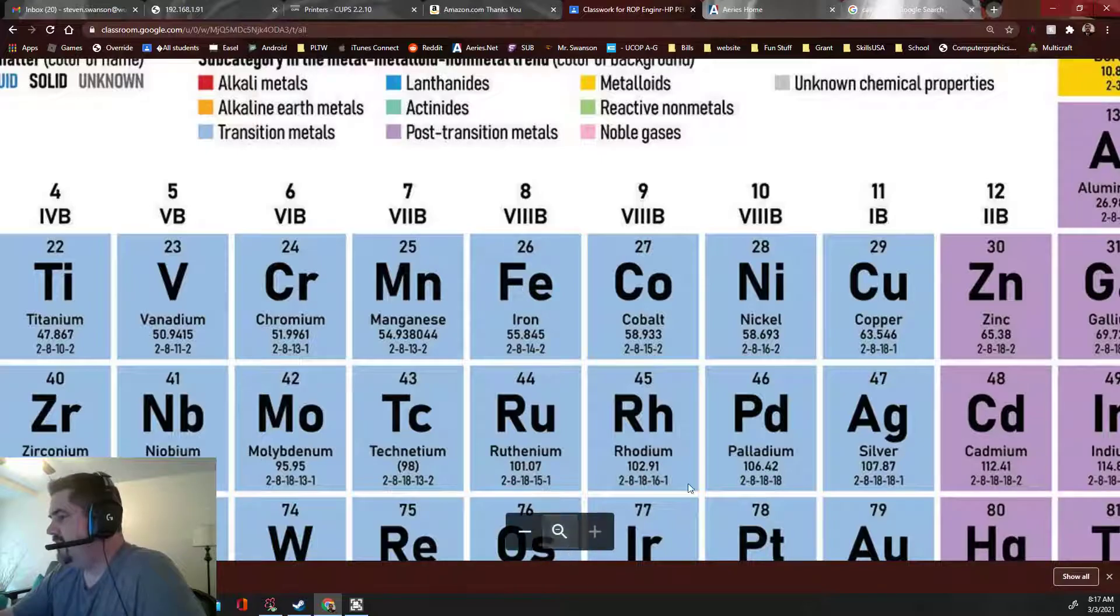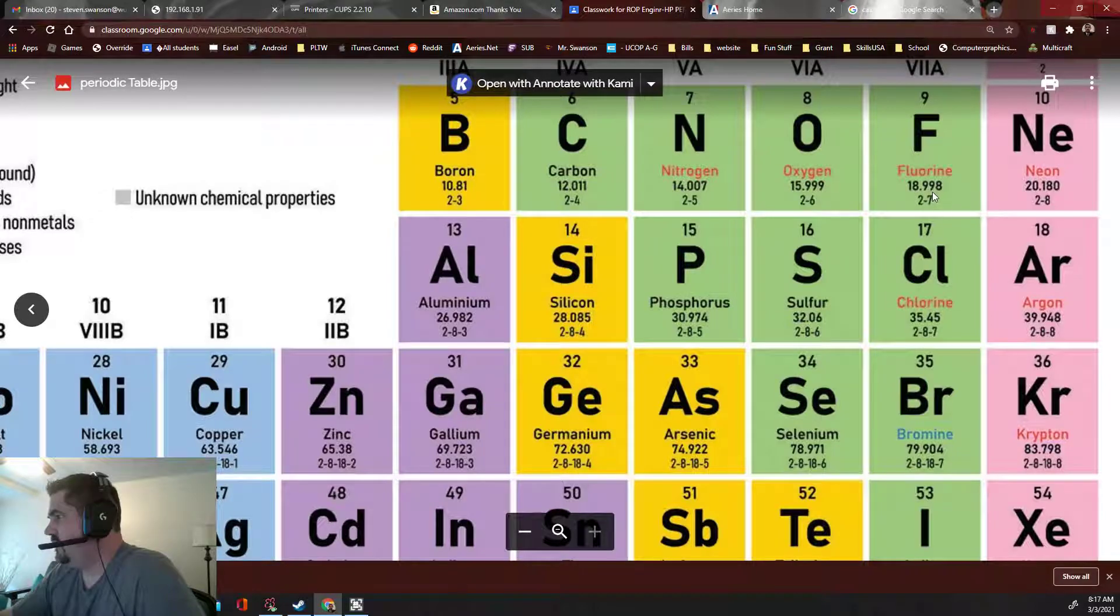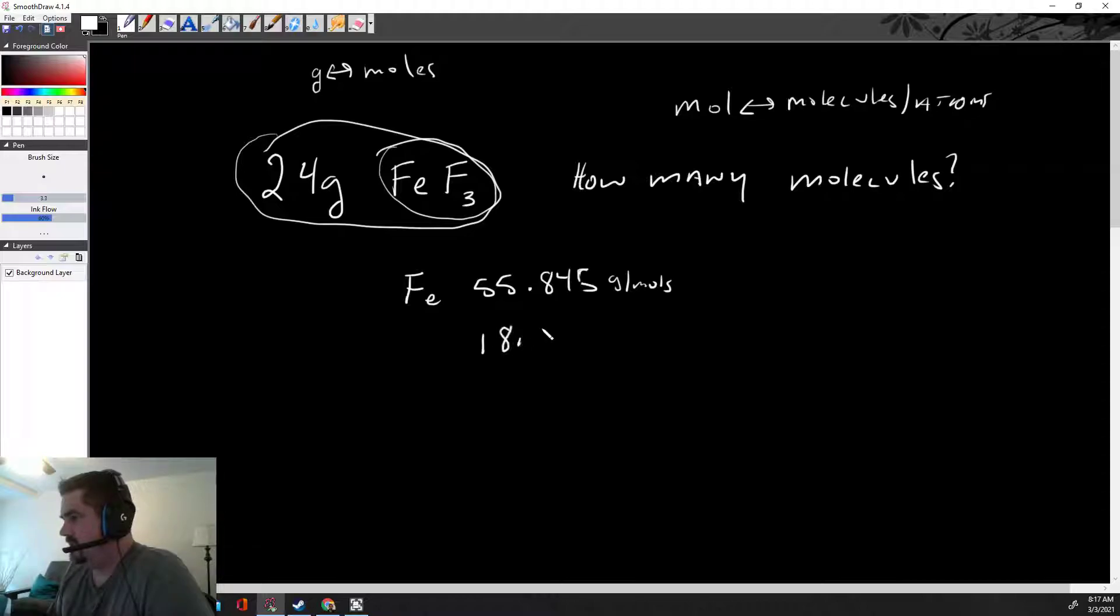So there's iron. And then the other one was fluorine, right? There it is. Fluorine, it's 18.998. I'll write that down first before I forget. Fluorine, right? But remember, there's one of these, only one iron. There's no number here, so it's just one iron. But there's three fluorines. So that's how many grams per mole fluorine is, right? And we got to times that one by three.